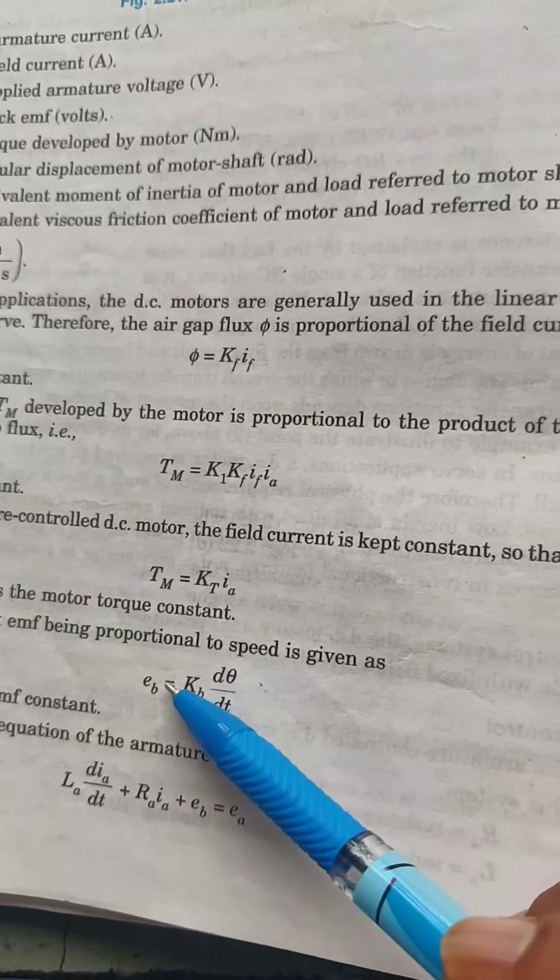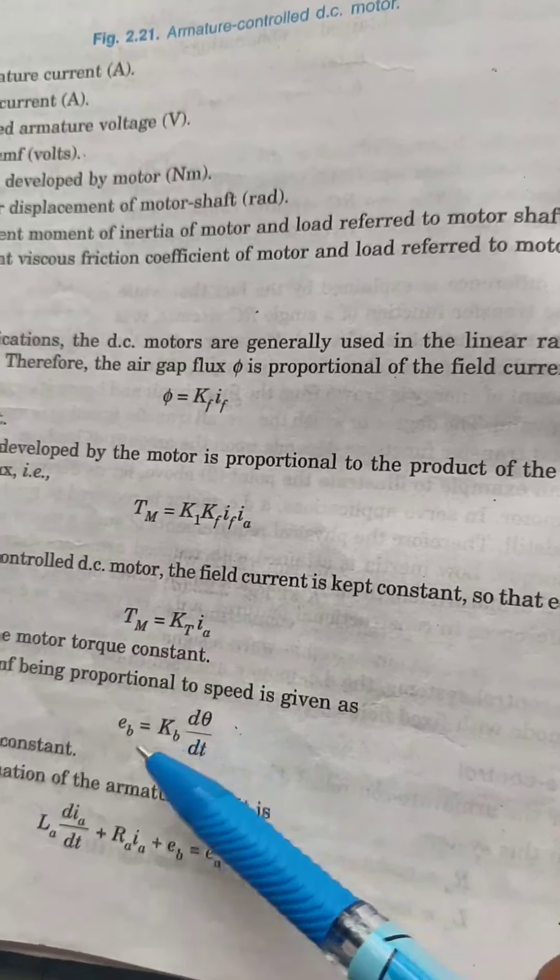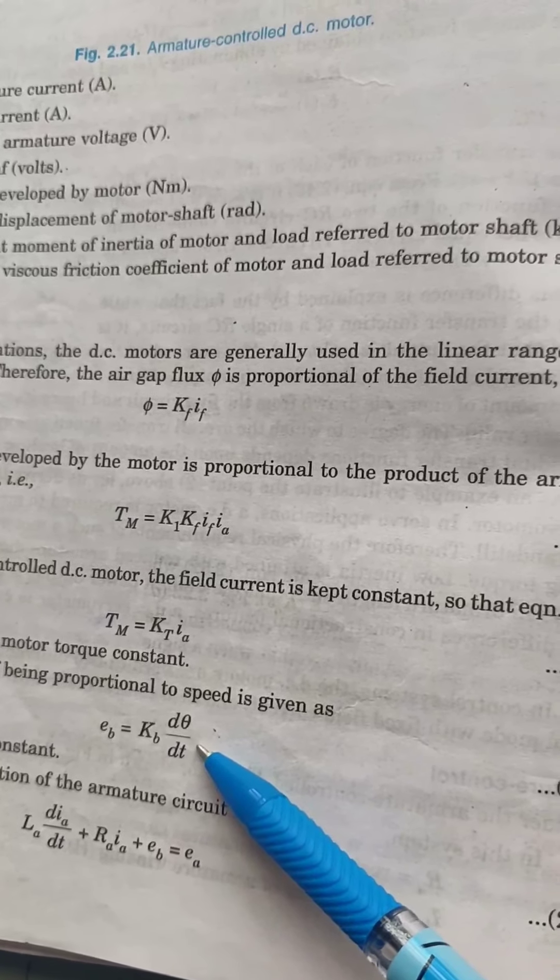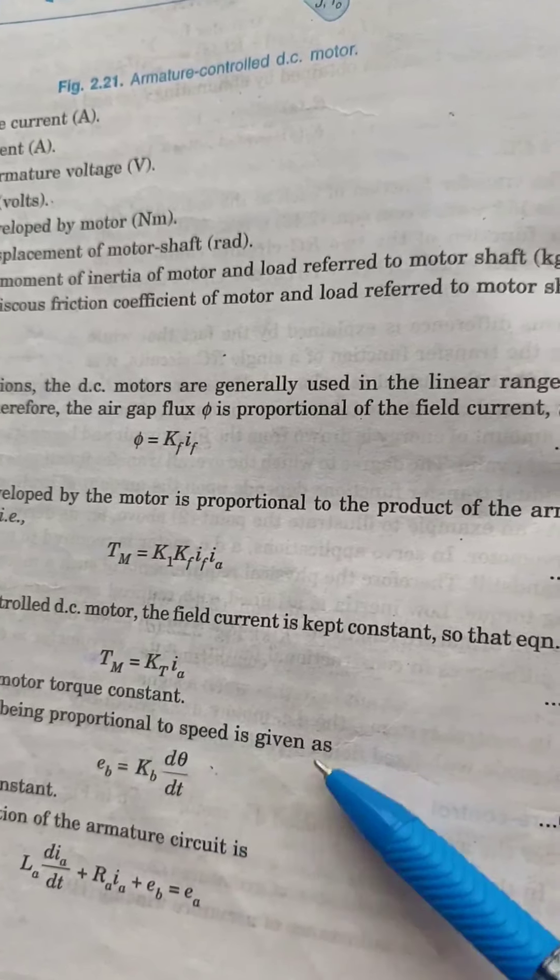Now EB back EMF is directly proportional to KB d theta by dt. Its formula is EB equals φZNP by 60A, so that remaining terms are constant. EB equals KB d theta by dt.